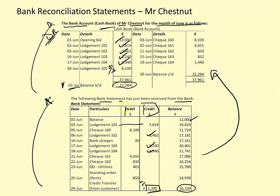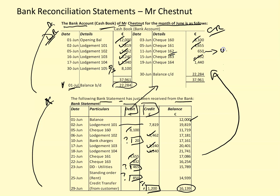Now I'm going to repeat the process, starting with the debit side of the bank statement, tracing items to the credit side of Mr. Chestnut's bank account cash book. Check number 160 — fine. Bank charges — Mr. Chestnut does not have that recorded, so I'll put a box and question mark. Check 161 — fine. Check 163 — fine. A standing order — box and question mark, Mr. Chestnut has no record. A direct debit for utilities — no record either. Check number 162 has not come through the system yet, so it is an unpresented check — I'll mark it with U.